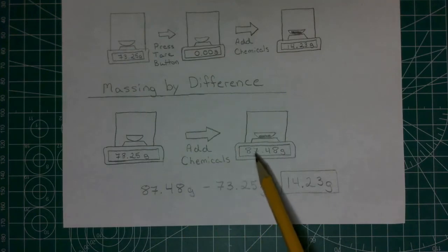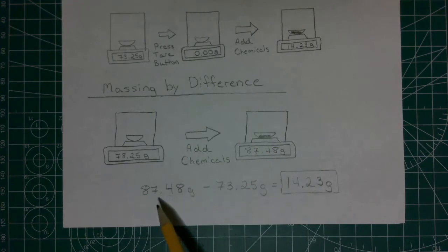Then I'm going to add my chemicals, and the mass is going to go up, so in this case I have 87.48 grams, and then I just take the difference of those two. So the 87.48 grams minus the mass of the container, and I can see that I added 14.23 grams of chemicals.